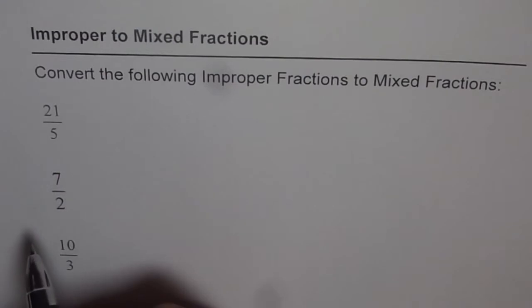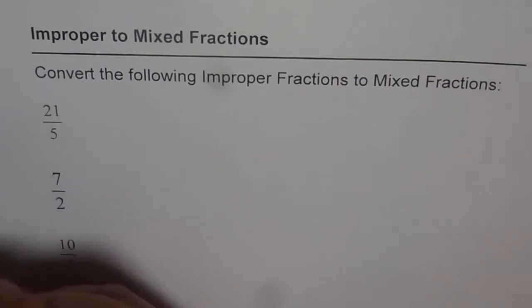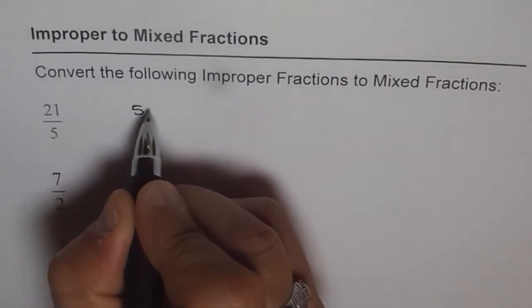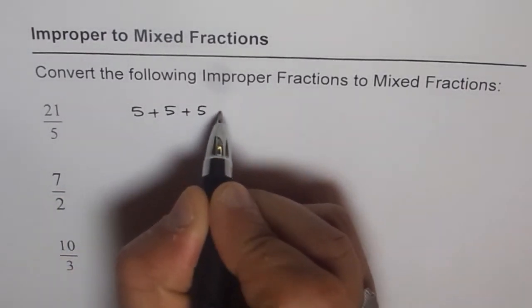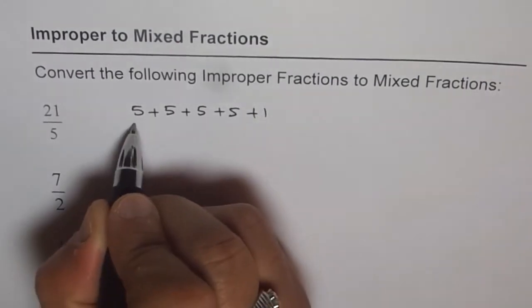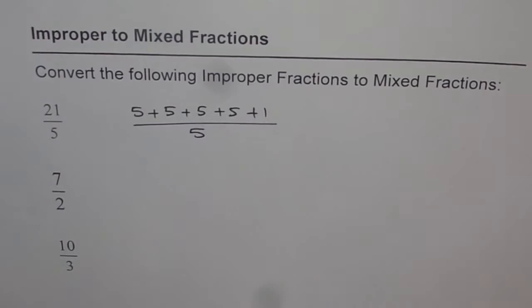So we have 21 over 5 and we need to write 21 as sum of 5's. How many 5's in 21? That is what we are trying to figure out. So let's write 5 plus 5 is 10, 10 plus 5 is 15, plus 5 is 20.